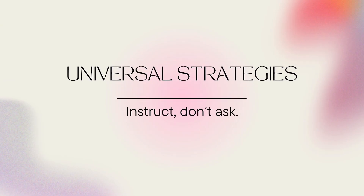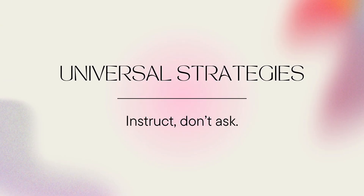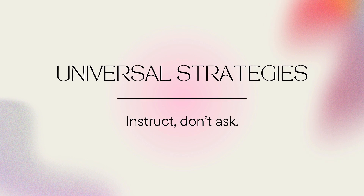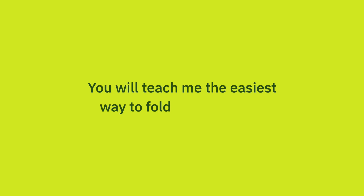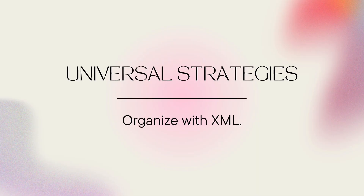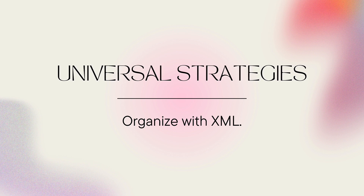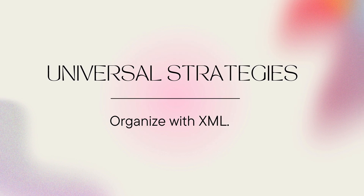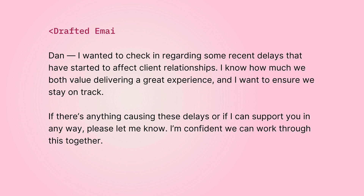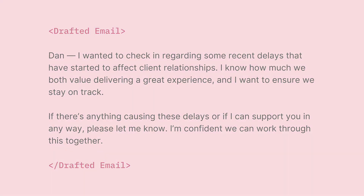It can feel like you're being rude, but because large language models essentially pick the most likely next word after your prompt, it's better to frame your prompt as instructions rather than questions. So rather than asking 'What's the best way to fold a fitted sheet?' say 'You will teach me the easiest way to fold a fitted sheet.' AIs will also understand your prompts better if you break them into labeled sections using XML syntax — mark the beginning of a section by placing its label within angled brackets, then close the section the same way but with a forward slash or the word 'end' before the label. This is especially important when providing material for the bot to reference, like content it's correcting or examples to follow. Now let's get into the Who, Why, What, How.